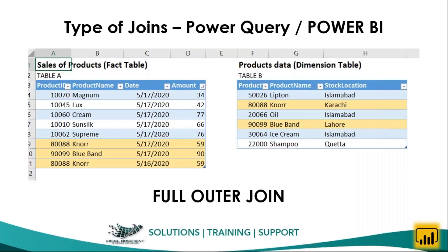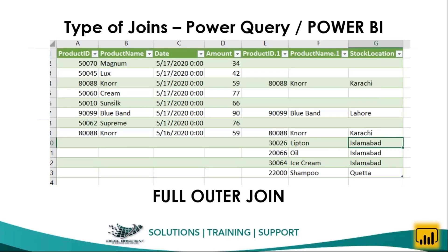The next type of join available in Power Query and Power BI is the full outer join. With the full outer join applied to the same two tables, all transactions come together — all data is merged. Those transactions that intersect and match each other appear on the same row, while all transactions from the left table and all from the right table are also included in the output.